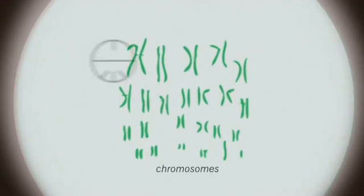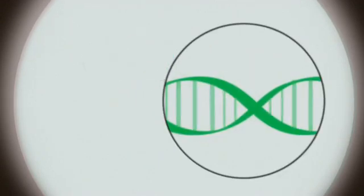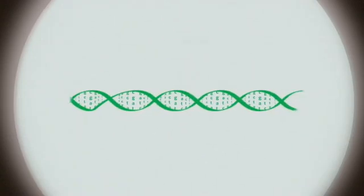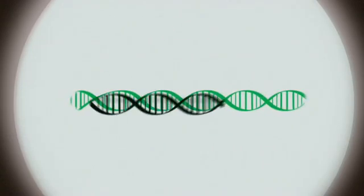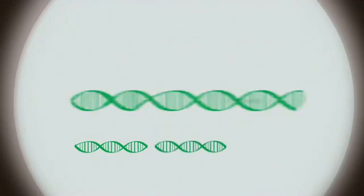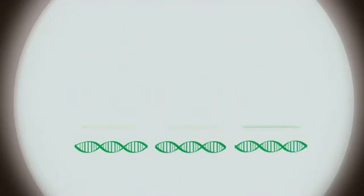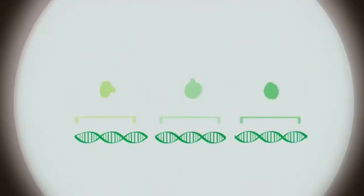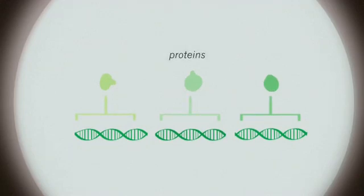We extract a cell, then identify the chromosome that contains the DNA code we need. The DNA is grouped into genes that encode the proteins which produce the feature we're looking for.